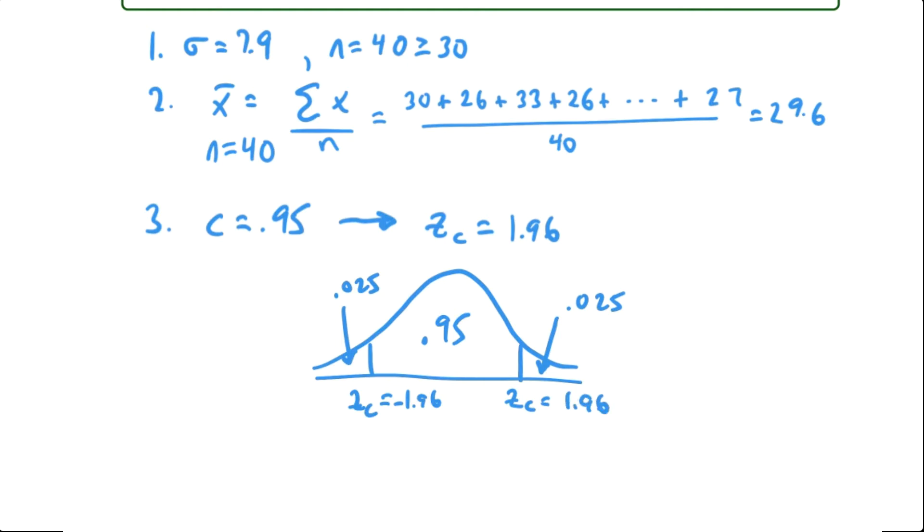All right next we're going to calculate the margin of error. Now the formula for the margin of error was the critical value times the population standard deviation divided by the square root of your sample size. So that's 1.96 times 7.9 divided by the square root of 40. And when you multiply and divide all that together we get 2.4.